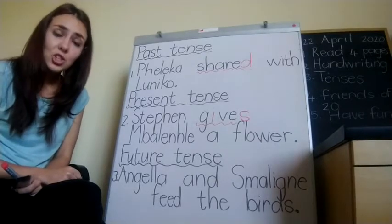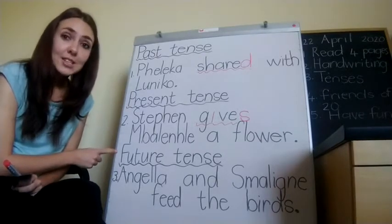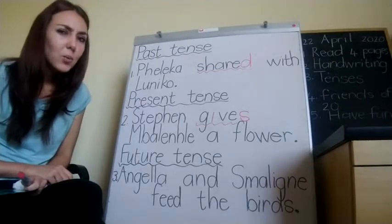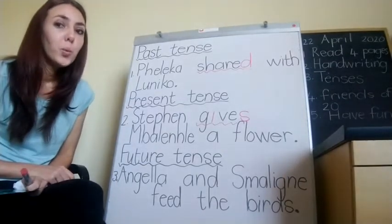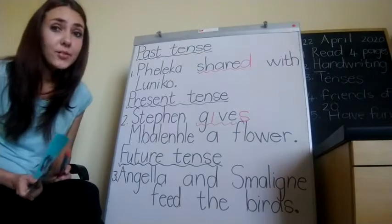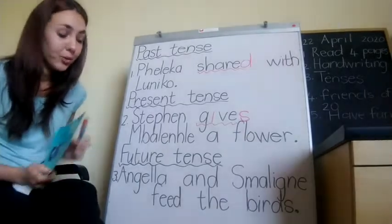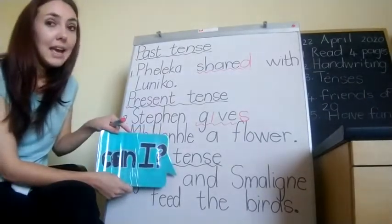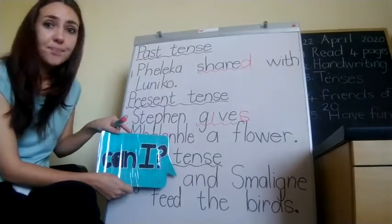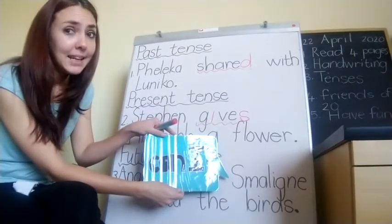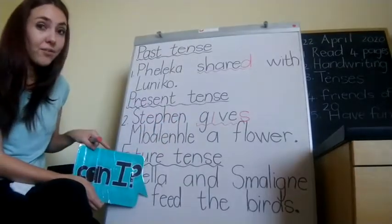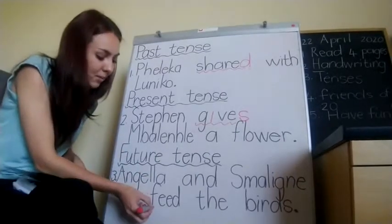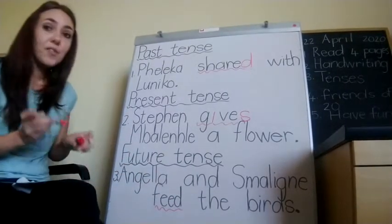But I want to change it to a future tense sentence. So what am I going to add? What is our magic word? Will. But let's first find our verb. Can I Angela? Can I and? Can I Smalingne? Can I feed? So I'm going to change the word 'feed'.